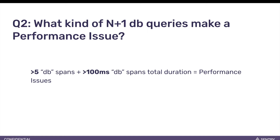What kind of N+1 DB queries make a performance issue? N+1 query describes a general pattern where there are numerous DB spans that try to make the same query. We want to capture the most useful and severe performance problems, so we have to introduce some thresholds. There are two main conditions to have a performance issue created: there should be at least five repeated identical DB spans and their total duration should be at least 100 milliseconds. Once those conditions are met, a performance issue gets created, or an existing issue gets updated with the new event details.